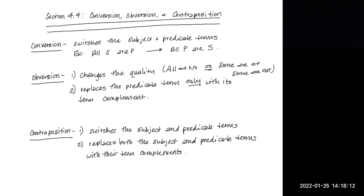So obversion will change the quality, meaning the all to no or the no to all or the some are to some are not. I know we called that the quantity earlier, but here we mean the quality as in it's all of something or none of something or some are or some are not. And it's also going to replace the term that's in the predicate position only with its term complement.